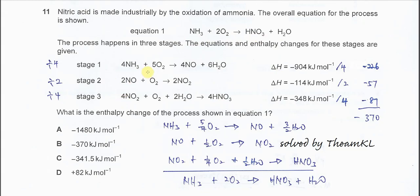We need to look at the numbers of ammonia. On the left-hand side, ammonia is one mole. In stage 1, we need to divide by 4 because after dividing by 4, ammonia will become 1 mole. The rest also becomes smaller. After dividing by 4, delta H also needs to divide by 4, so now it becomes negative 226. The new stage 1 equation is formed.